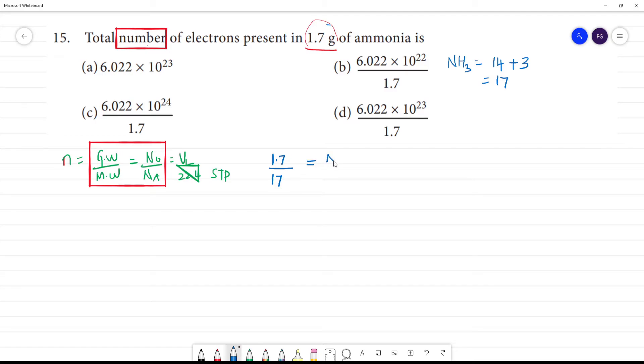N0 equals Avogadro's number, 6.022 times 10 to the power 23. Now we cross multiply: 6.022 times 10 to the power 23 times 1.7 divided by 17. Now we calculate the question.